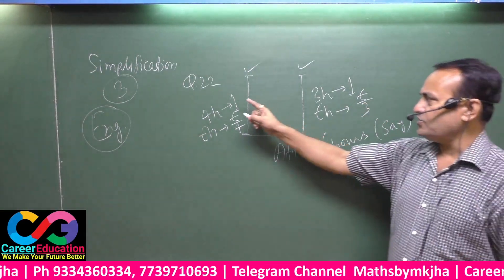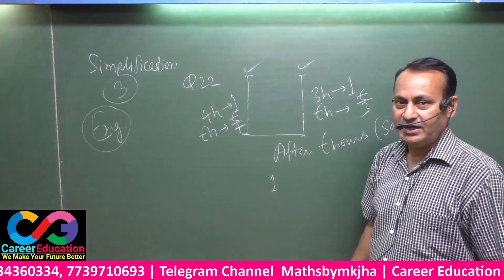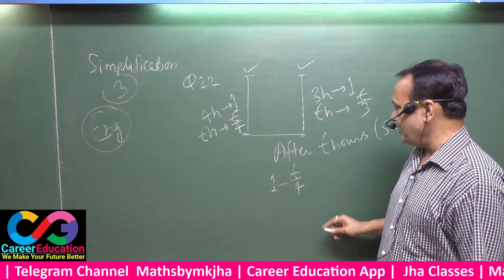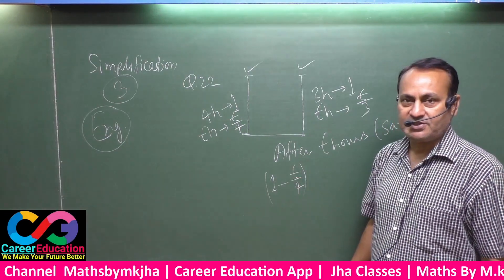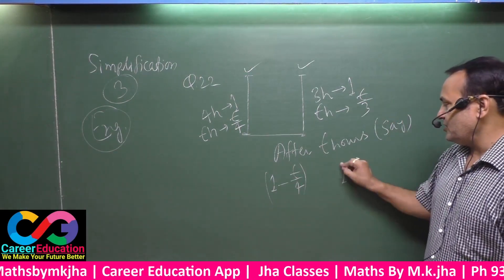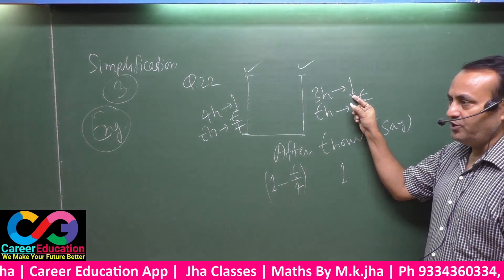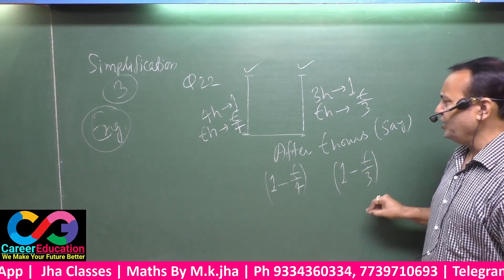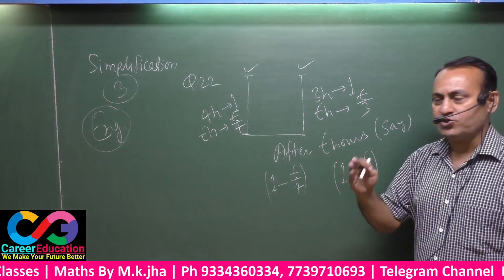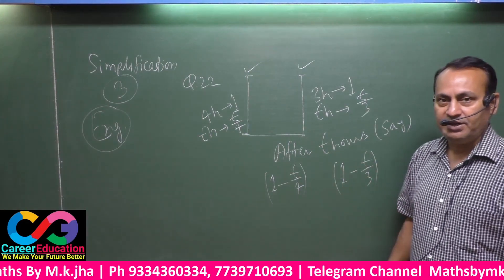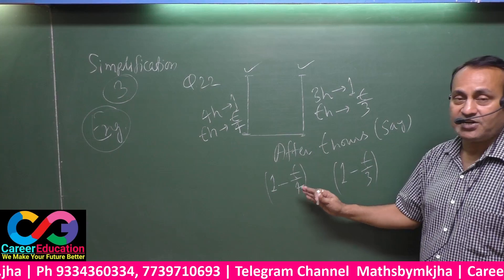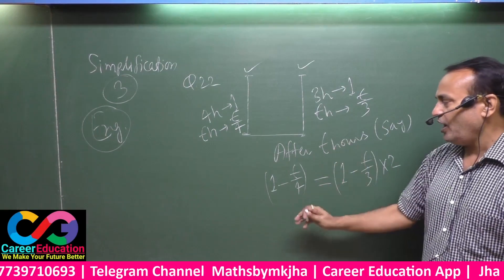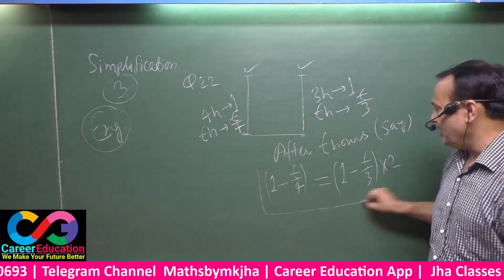Since the first candle was one unit height and melted t by four in t hours, the remaining length of the first candle is one minus t by four. Similarly, the second candle was one unit and melts t by three units in t hours, so the remaining length of the second candle is one minus t by three.